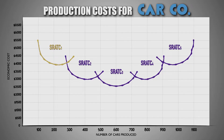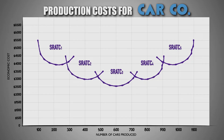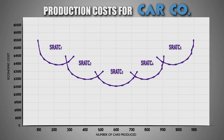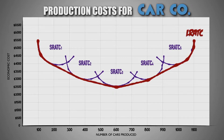SRATC 1 represents the total cost of production per car with one factory in operation. SRATC 2 represents the total cost of production per car with two factories in operation. SRATC 3 represents the total cost of production per car with three factories in operation. SRATC 4 represents the total cost of production per car with four factories in operation. And SRATC 5 represents the total cost of production per car with five factories in operation. In order to visualize the changes in total production costs as it scales its output in the long run, the firm can combine the average total cost of production at each plant capacity to create a long-run average total cost curve.